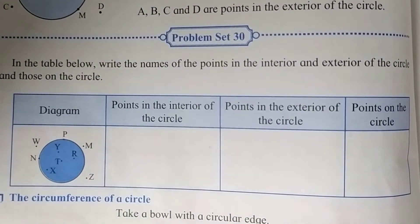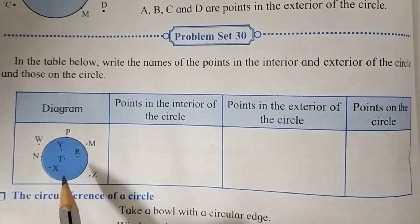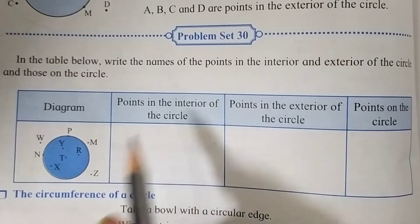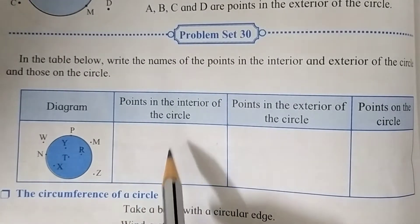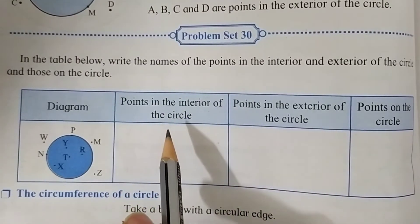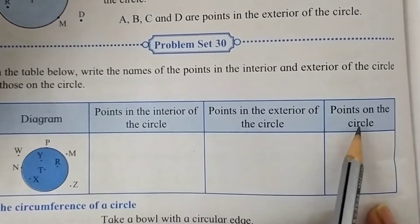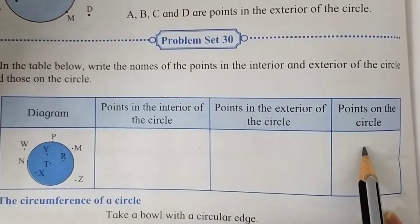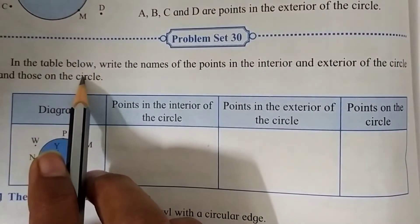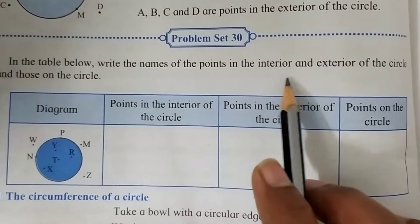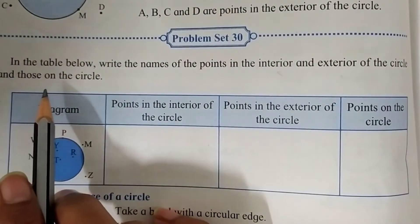Now you can see here there are four columns. In the first column they give us a diagram. In the second column we have to find out points in the interior of the circle, points in the exterior of the circle, and in the third column we have to find out points on the circle. The question asks us to write the names of the points in the interior and exterior of the circle and those on the circle.